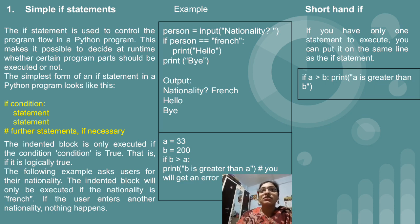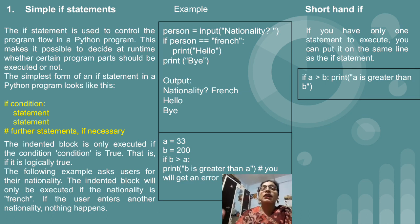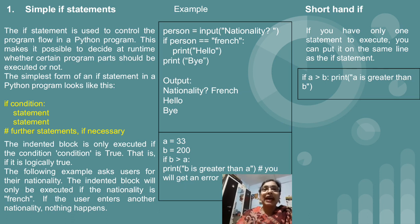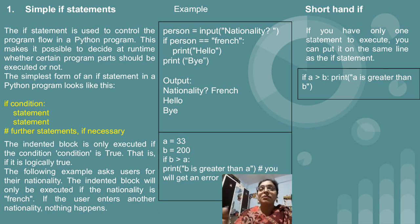Just see the syntax which is in yellow color. Write the if keyword, then put a space. After the space, write down the condition — that is, a greater than b, a equal to b, or whatever condition you want to write using conditional operators. After that, put a colon, which is part of the syntax. After the colon, press Enter and then press Tab. Tab space is important. Actually, if you are using Python software, the tab will be automatically generated by the Python interpreter. After the tab, whatever statements are present after the if condition will be considered as part of the if block.